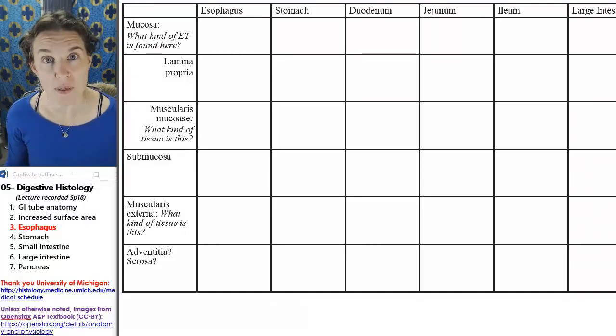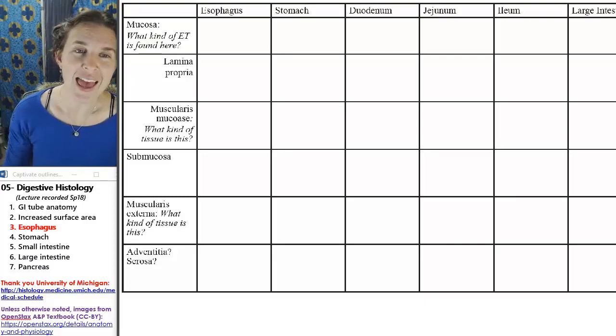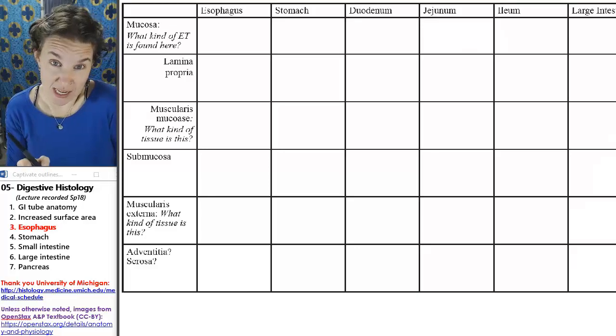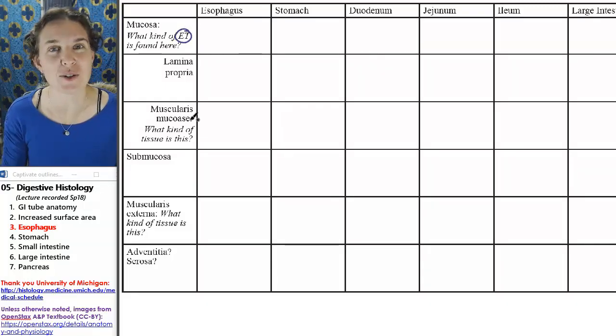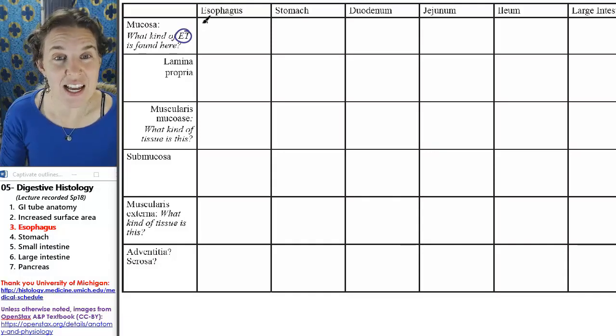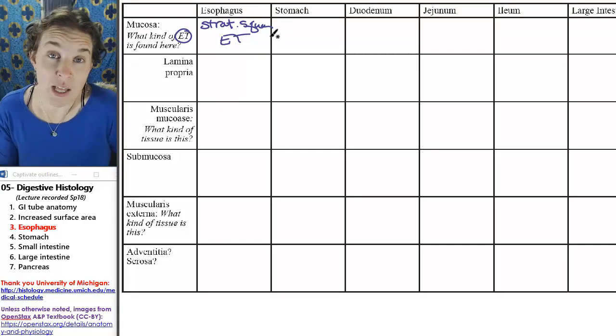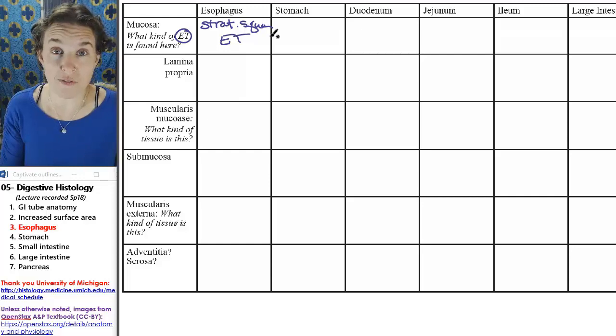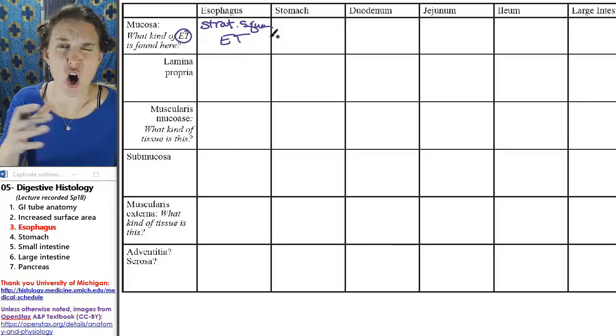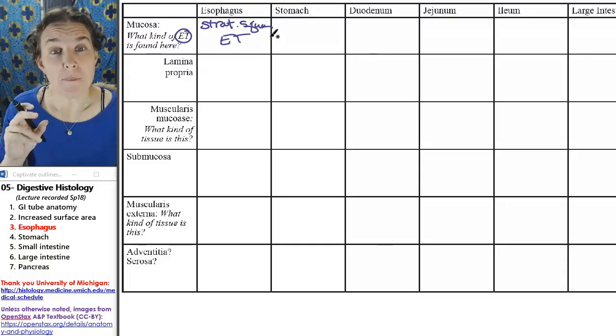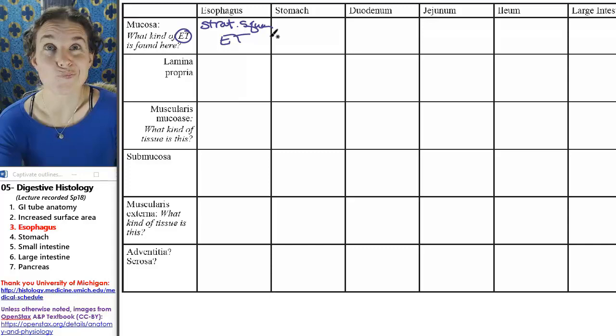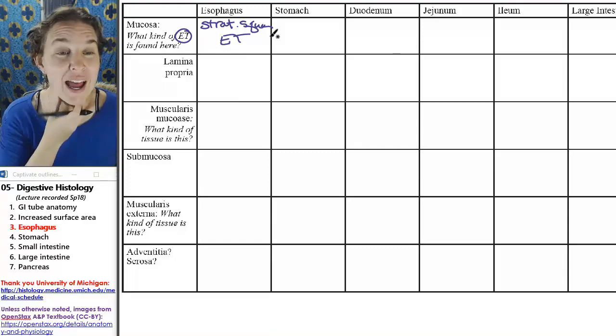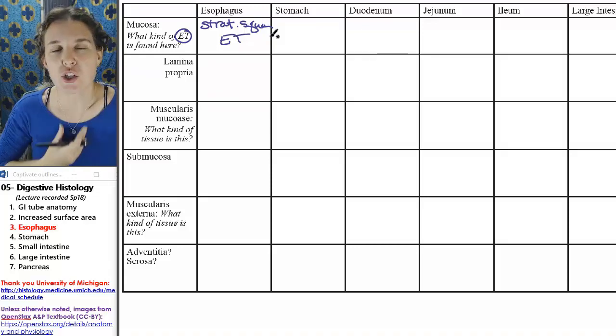We're going to start with the esophagus because it's first, and the esophagus might be the easiest one to identify. It is the only part of the tube that has a different kind of epithelial tissue lining the lumen. The esophagus is lined with stratified squamous epithelial tissue. All of them are lined with epithelial tissue because you only find epithelial along a lumen, and all of them have lumens in the middle.